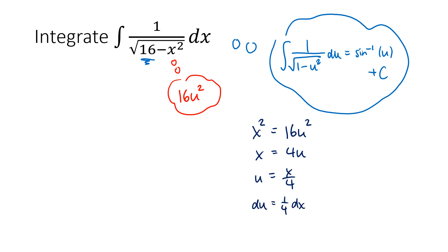So in my original integral, I need to put in a factor of 1 fourth, and then I need to put the reciprocal of that, which is a 4, out front. So now what I have is 4 times the integral of 1 over the square root of 16 minus 16u squared. Remember, that was the whole point of doing that substitution. And then 1 fourth dx, that's du.